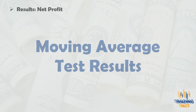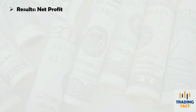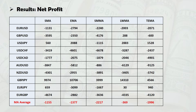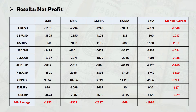Starting with net profit — a moving average reversal strategy is very unlikely to be profitable, hence the sea of negative values. The bottom row shows the average performance of each moving average across all 10 markets, while the market average column shows the average performance of each market across the five moving averages. Since we're using moving averages to generate trend-following entries, this gives an indication of how well each market trends.